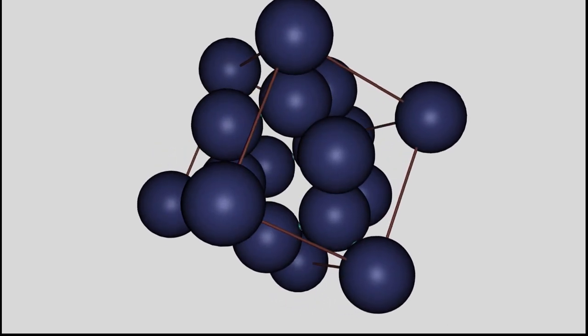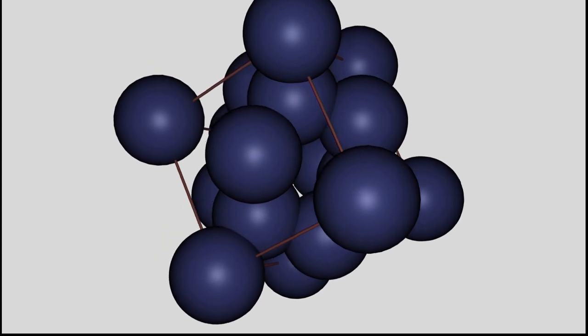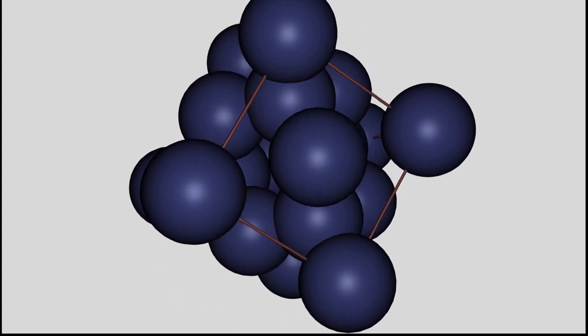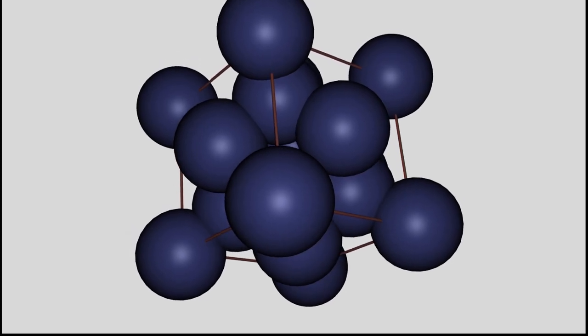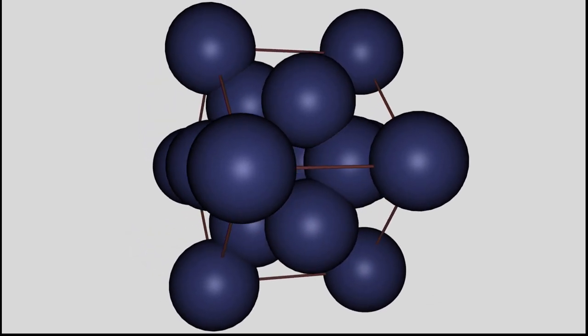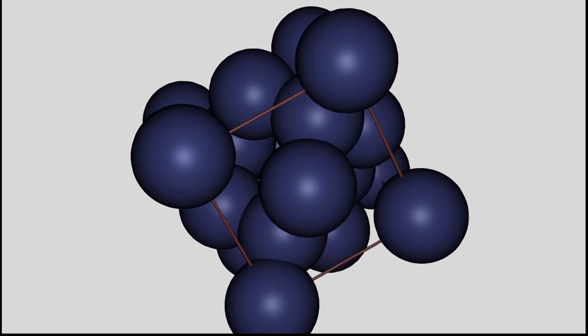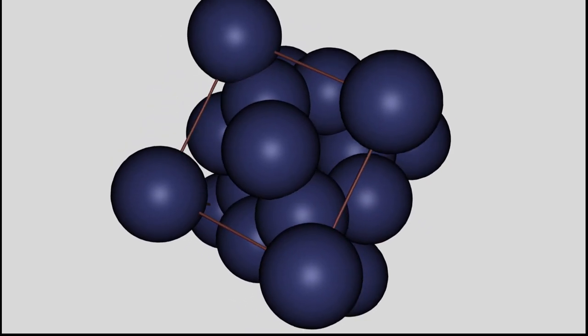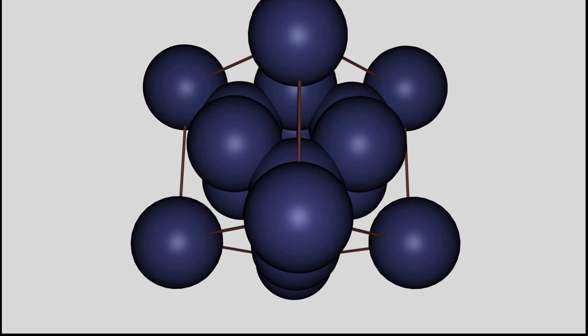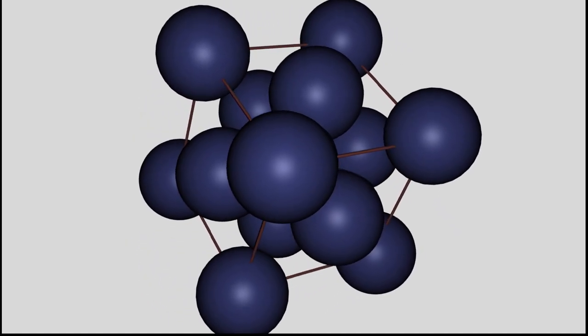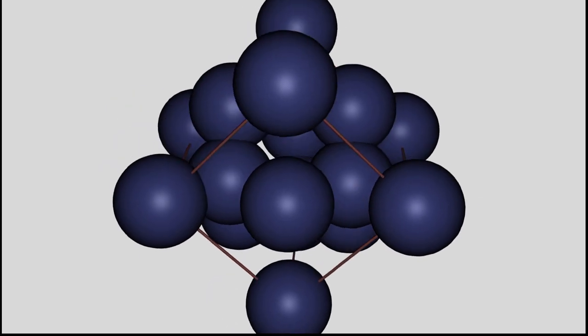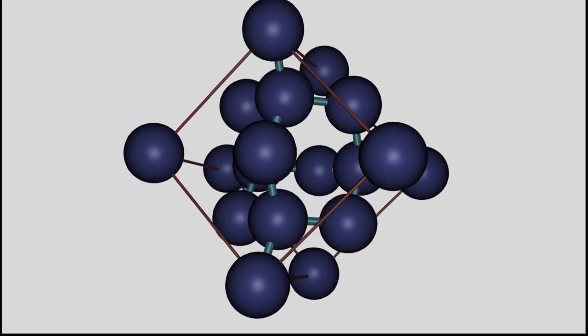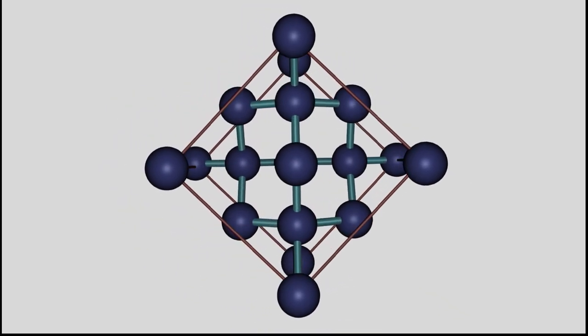You can't see the atoms of the crystal lattice with your eyes and even the strongest microscopes are not able to display the structure directly. The surface of the crystal lattice can be scanned by using an atomic force microscope. The thereby generated pictures are not comparable to the ball and stick model used here.